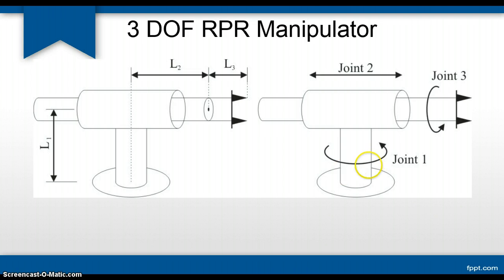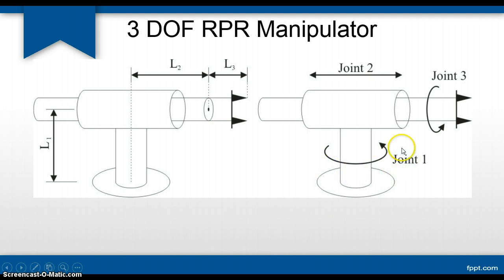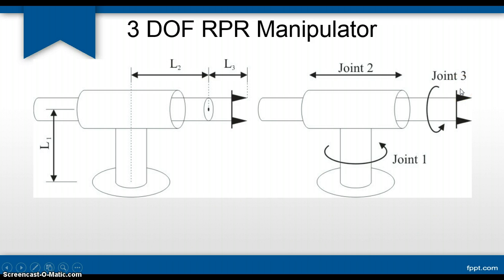In this session we will solve a particular example where the first link will be rotating around the vertical axis, given by joint 1. The second link will be sliding, given by joint 2, and we have a tool attached at the end of the second link, given as joint 3.